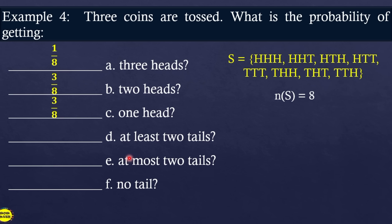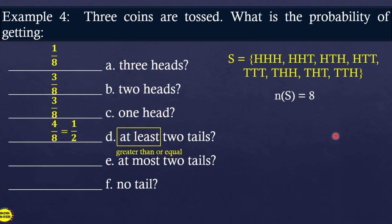What is the probability of getting at least 2 tails? Remember, 'at least' means greater than or equal to, so that is 2 or more tails. Counting outcomes with 2 or more tails in the sample space, there are 4 such outcomes. Therefore, probability = 4 over 8, which simplifies to 1/2.